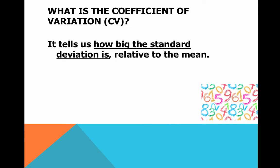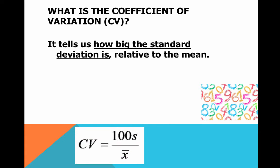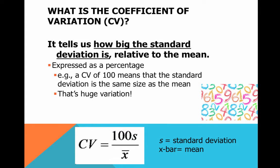Our last measure of dispersion is the coefficient of variation. This tells us how big the standard deviation is relative to the mean. The equation is: coefficient of variation equals 100 times the standard deviation divided by the mean. Because we multiply by 100, it's expressed as a percentage — so whenever we calculate CV, we should always express it as a percentage.